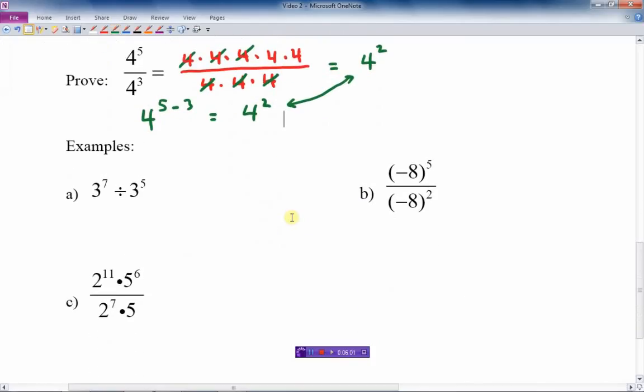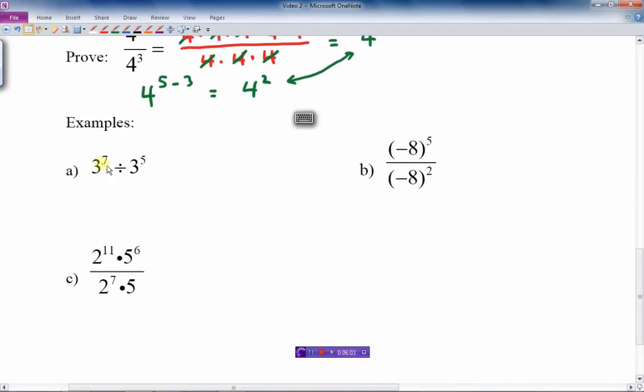Let's do some examples of this one and finish off these examples here. So 3 to the 7 divided by 3 to the 5 is just 3 to the 7 minus 5, which is 3 squared. There it is there.